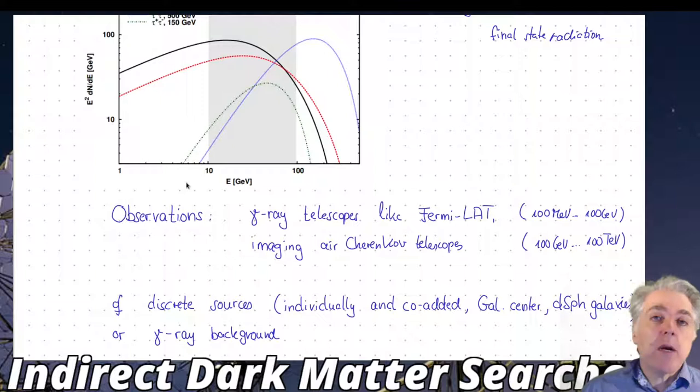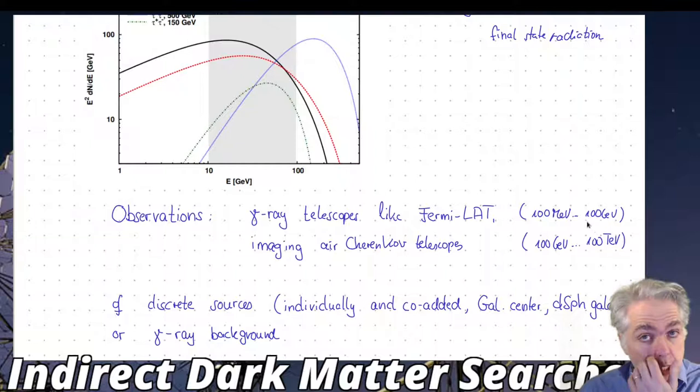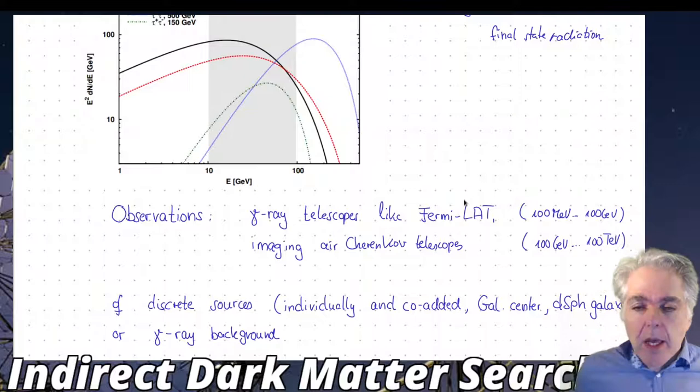What observations are being done? We've looked into gamma ray telescopes already in an earlier section. We have for example the Fermi-LAT pair telescope observing between 100 MeV and 100 GeV, and we have the imaging Cherenkov telescopes which observe between 100 GeV and 100 TeV. This is directly the mass range of WIMP particles that could be probed with these observations.